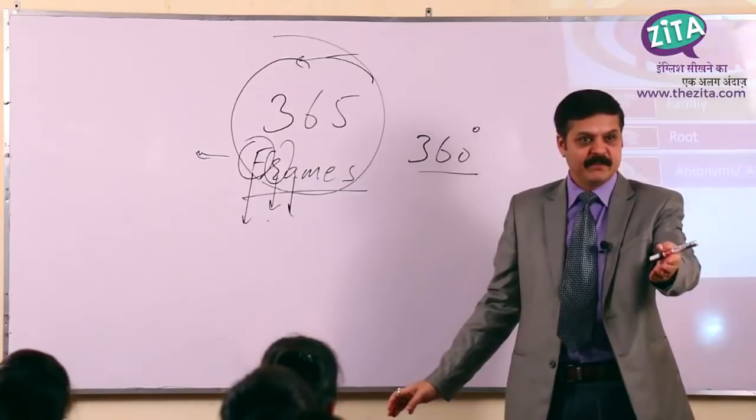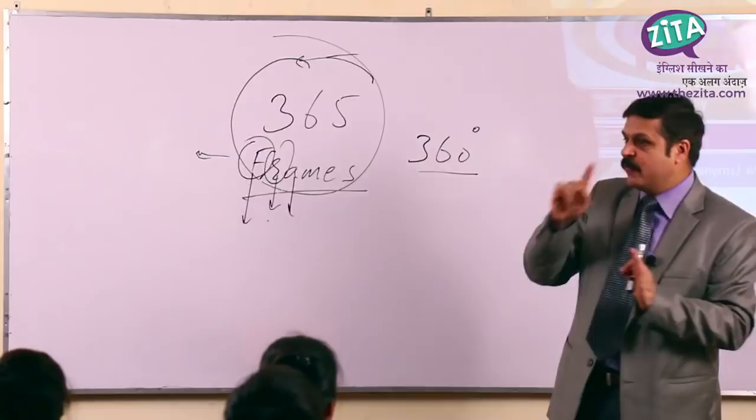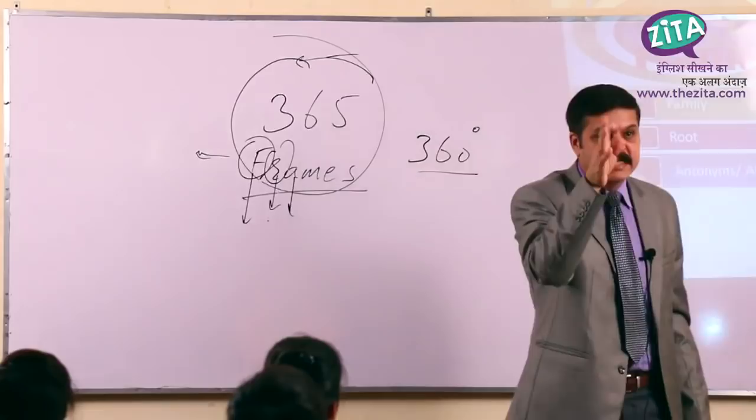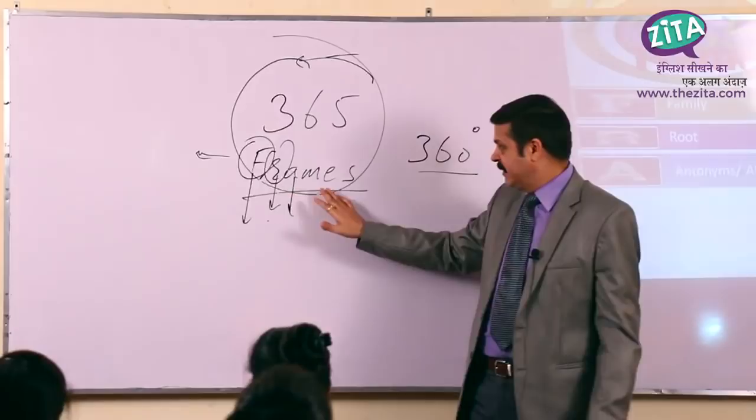Alarm Bell can also be the pronunciation. तो अगर आपके पास word आया V-A-G-U-E, कान खड़े होने चाहिए इसकी pronunciation को लेकर। So it is 'vague' — it is not 'vague-u'. और G-U-E से खतम होने वाले सारे words, जिनकी spelling Q-U-E से खतम होगी, वो 'kv' लेंगे। तो ये Alarm Bell कराएगी। ये नया concept है।